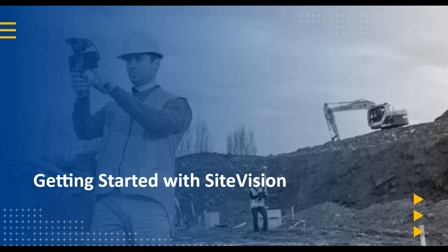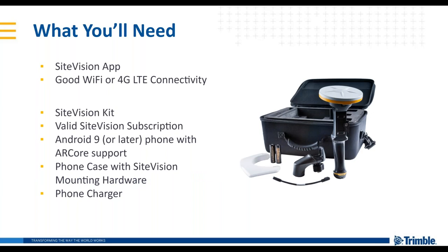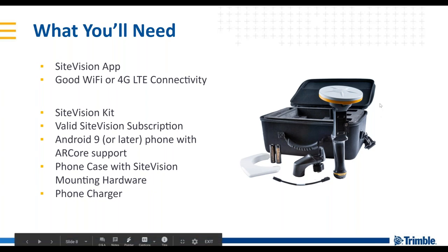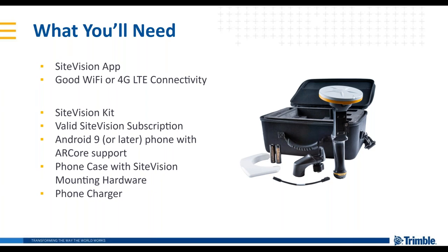To get started with Site Vision, you'll need the Site Vision app from the Google Play Store, good Wi-Fi or at least 4G connectivity, and the Site Vision kit. The kit comes with a case, a bracket with the DA1 antenna on top, a pole mount for heights, battery charger and batteries, and a little sunshade. You'll also need a valid Site Vision subscription, an Android 9 or later phone with ARCore support, a phone case, a mounting bracket, and a phone charger. The phone does not come with Site Vision, so that is a separate purchase.